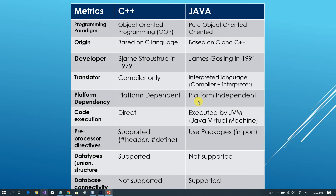In C++, code is compiled directly. C++ also uses a preprocessor, such as hash-include and hash-define directives. Java does not use a preprocessor — Java has zero preprocessor directives.